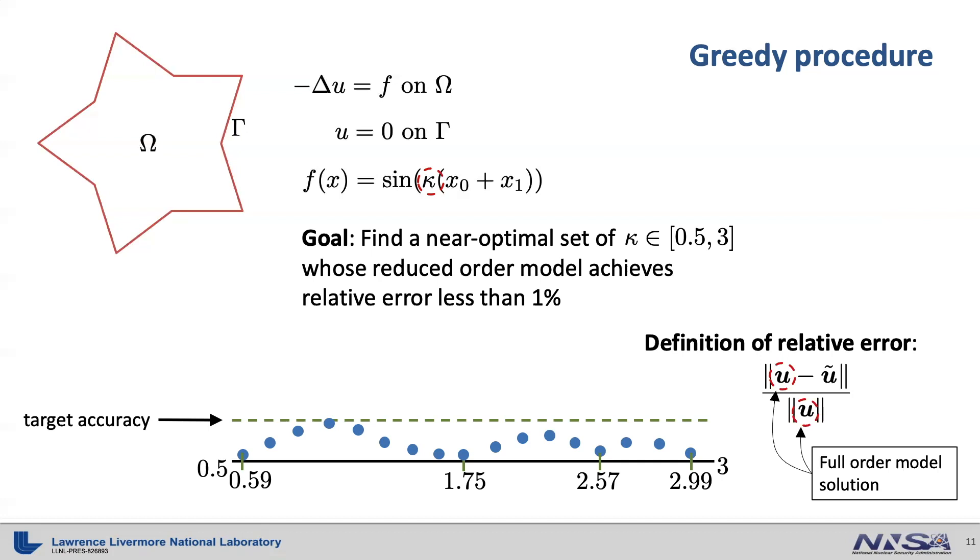Therefore, we need to replace the relative error with something else that can efficiently measure the accuracy of the reduced order model. An efficient alternative is called an error indicator.